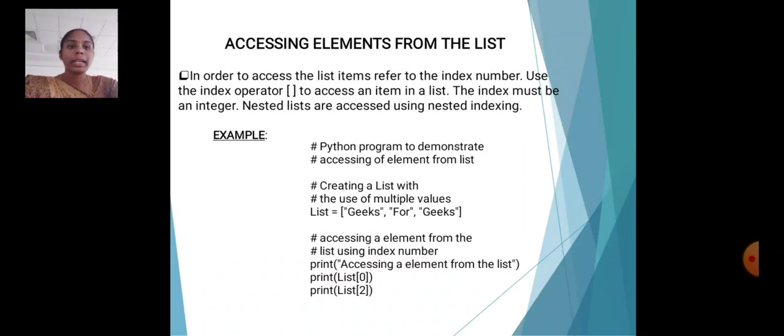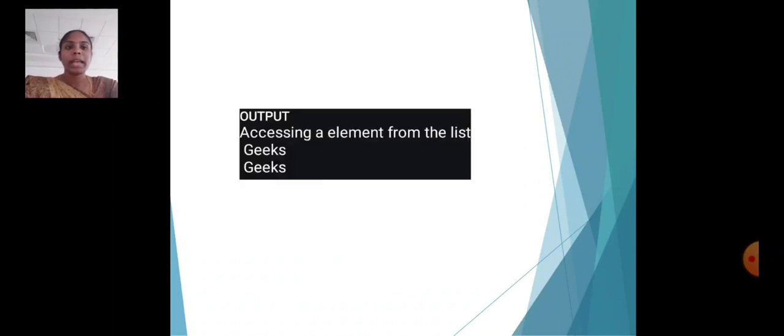Nested lists are accessed using nested indexing. Example: Creating a list with the use of multiple values, list equals jigs for jigs. Accessing elements from the list, print list[0], list[2]. The output is accessing elements from the list: jigs, jigs.